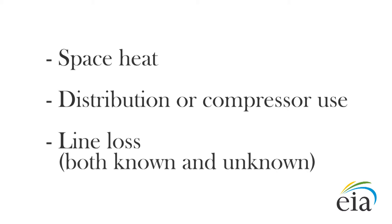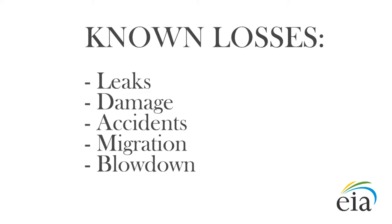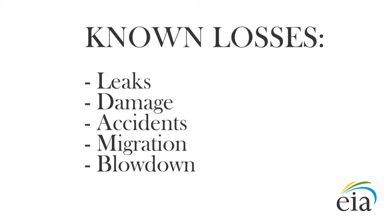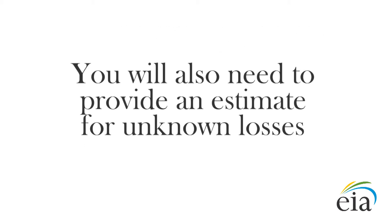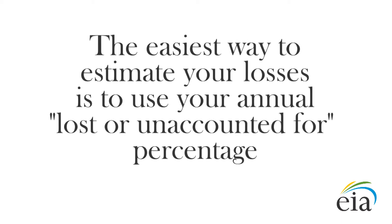This includes both known losses and unknown losses. Known losses include leaks, damage, accidents, migration, and blowdown. You will also need to provide an estimate for unknown losses. Estimating unknown losses is the hardest part of Line 2.1. The easiest way to estimate your losses is to use your annual lost or unaccounted for percentage, known as LUOF or LOF. Simply apply your LUOF percentage to your monthly deliveries. That will give you your loss volume.